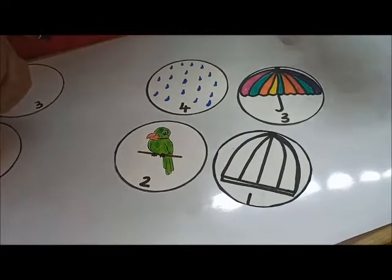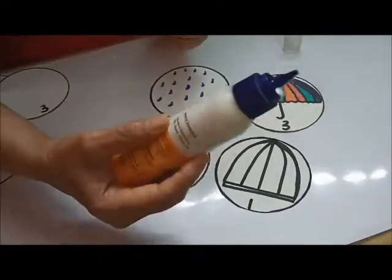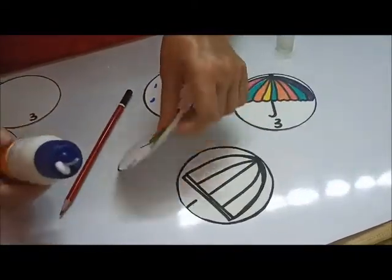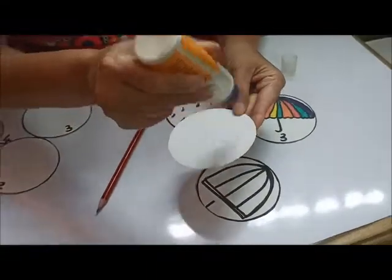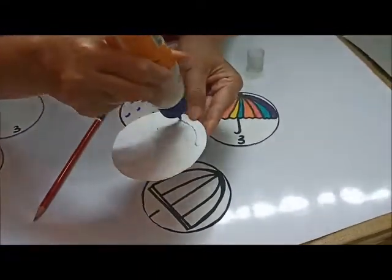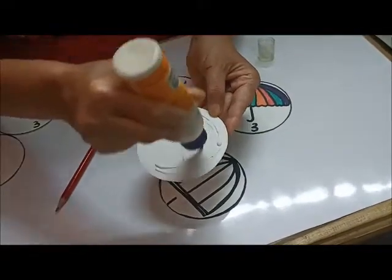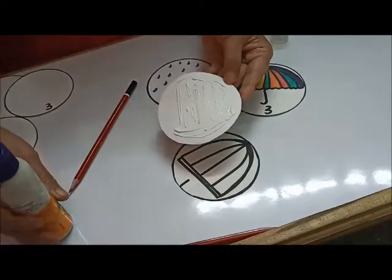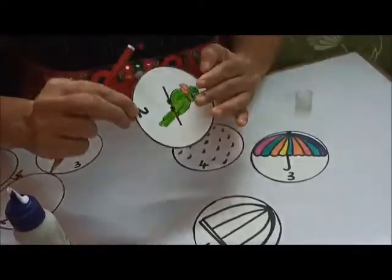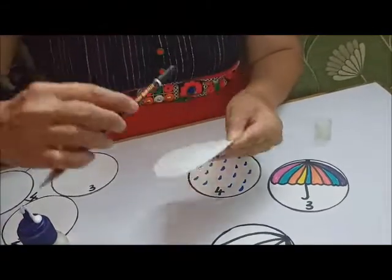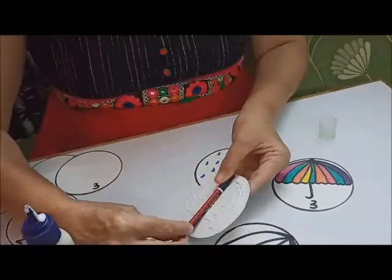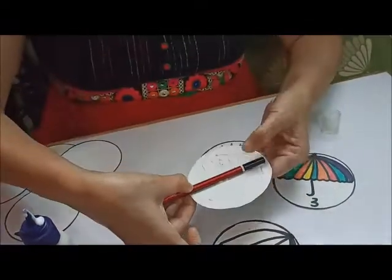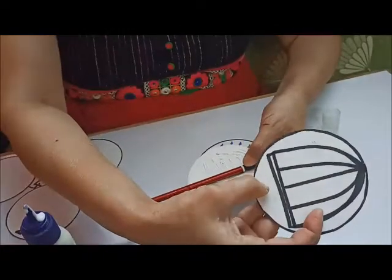Now, we are ready with our artwork, fevicol and pencil. Now, one and two. Turn it around and put some fevicol on it like this. Now, see how the pencil has to be placed. This is two here. Place the pencil like this.